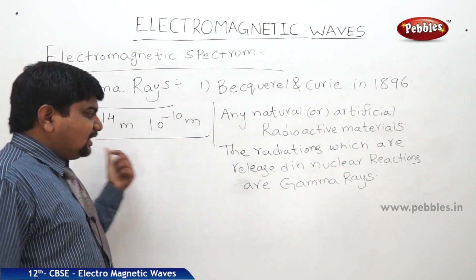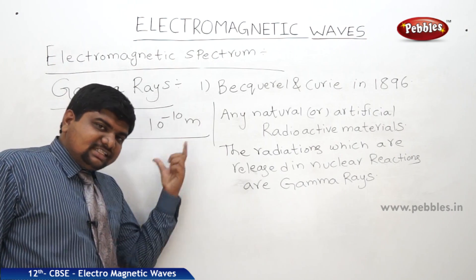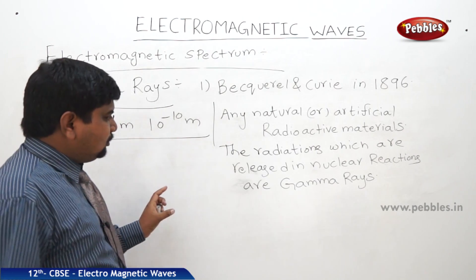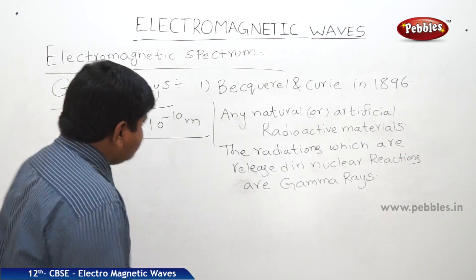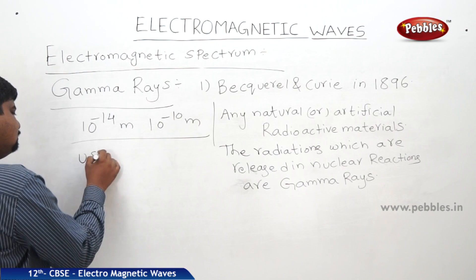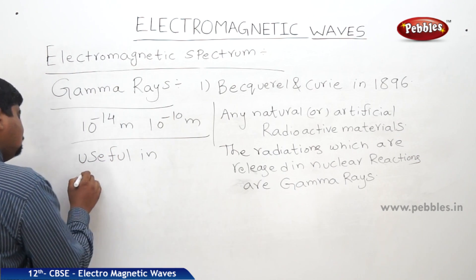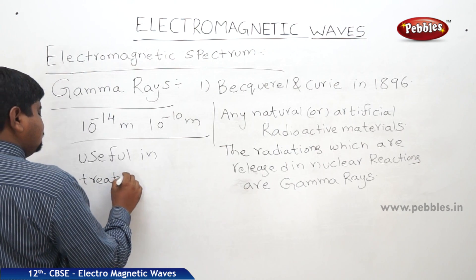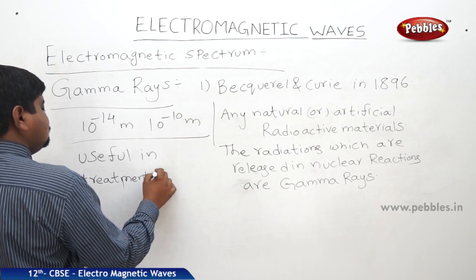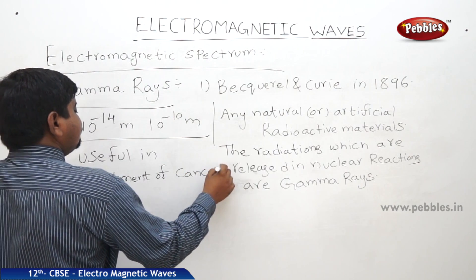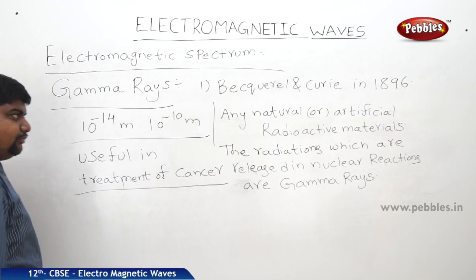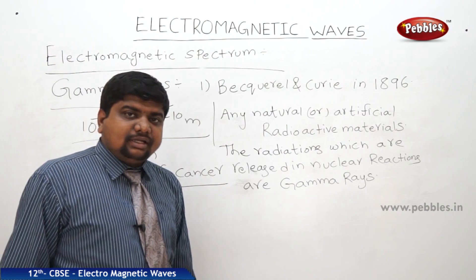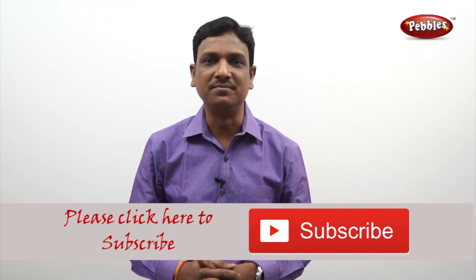Gamma rays can react with photosensitive materials. Their main use is in the treatment of cancer. These rays are useful in treating cancer. If you like this video, please give a thumbs up and subscribe to our channel to get more videos on the CBSE syllabus.